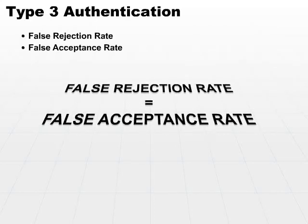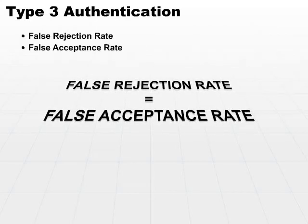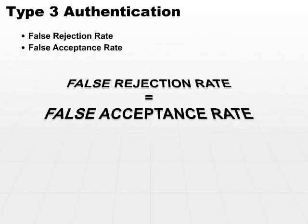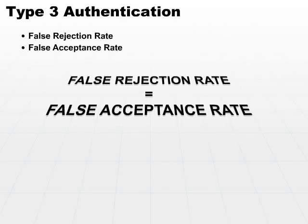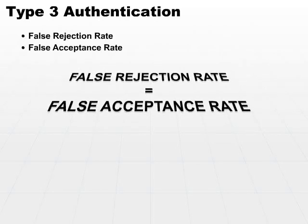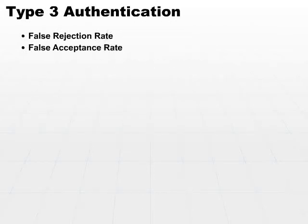So what we look at is value a system based on the point at which the false rejection rate and the false acceptance rate cross if we graph them. And that point is called the crossover error rate.